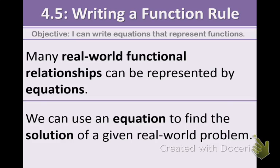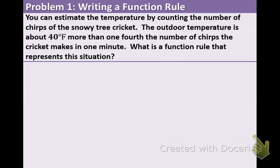The first two example problems that we're doing today are real-world situations. In example 1, we have this problem. You can estimate the temperature by counting the number of chirps of the snowy tree cricket. The outdoor temperature is about 40°F more than one-fourth the number of chirps the cricket makes in one minute. What is a function rule that represents this situation?